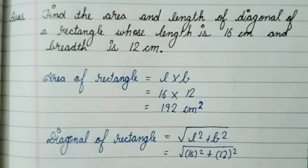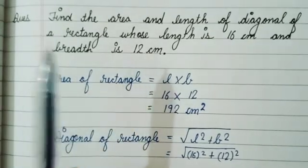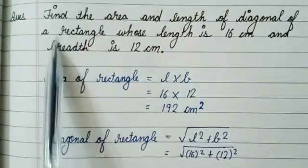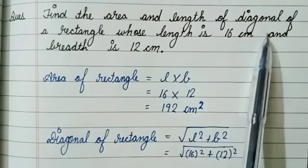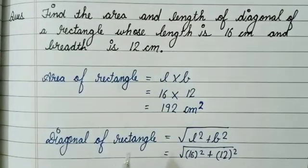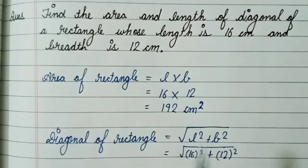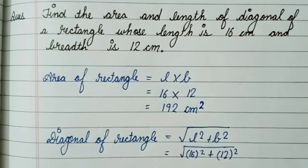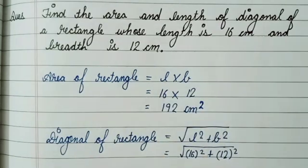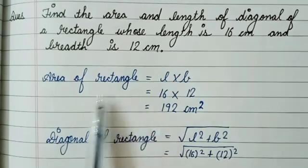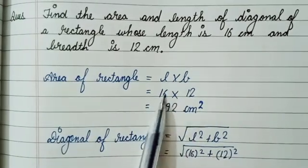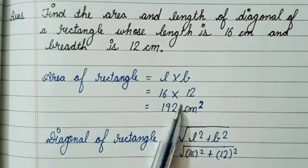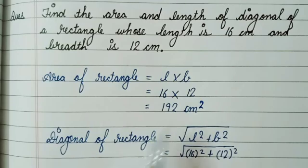Let's understand the question again. We had to find the area and the diagonal of the rectangle, and we are given two things: length and breadth. The area of a rectangle formula is length into breadth. We have length 16 and breadth 12, so 16 times 12 gives us 192 cm squared. This is the area of the rectangle.